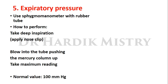Now expiratory pressure. To measure it, use a sphygmomanometer with a rubber tube but without the Riva-Rocci cuff. Tell the subject to take a deep inspiration, then close their nose using a nose clip or fingers, and blow air into the rubber tube so that the mercury column is pushed upward. Take the maximum reading up to which the mercury rises in the mercury manometer. Normal value is 100 mm Hg.